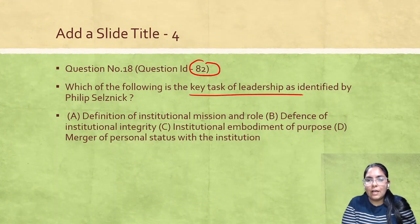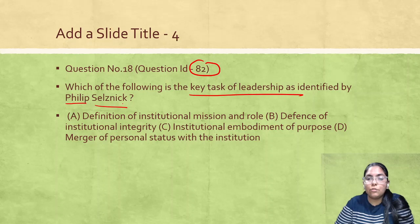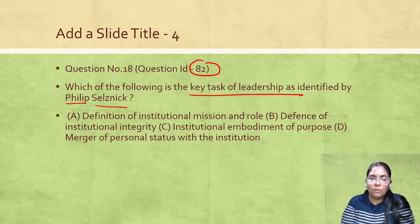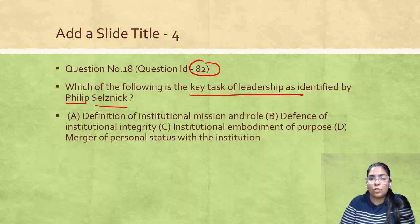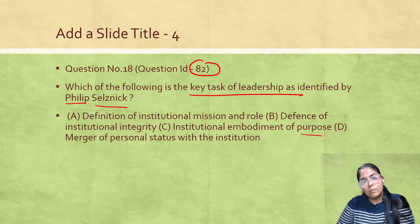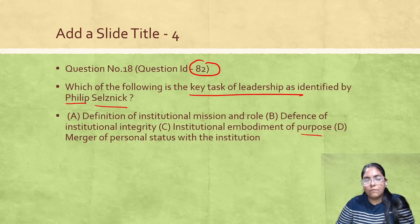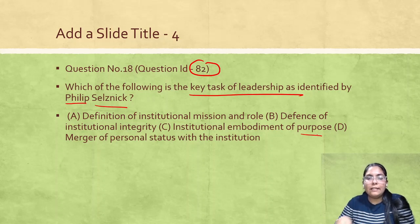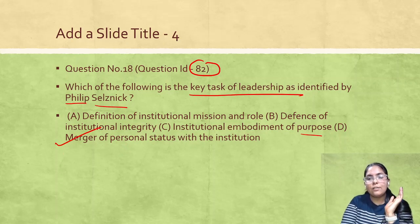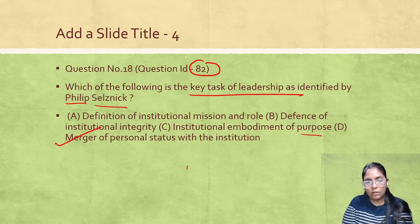Question ID 82: Which of the following is a key task of leadership as identified by Philip Selznick? Options include: defining institutional mission and role, defending institutional integrity, institutional embodiment of purpose, or matching personal status with the institution. The key task of a leader is to merge their own personality and status with the institution. The correct answer is option D.